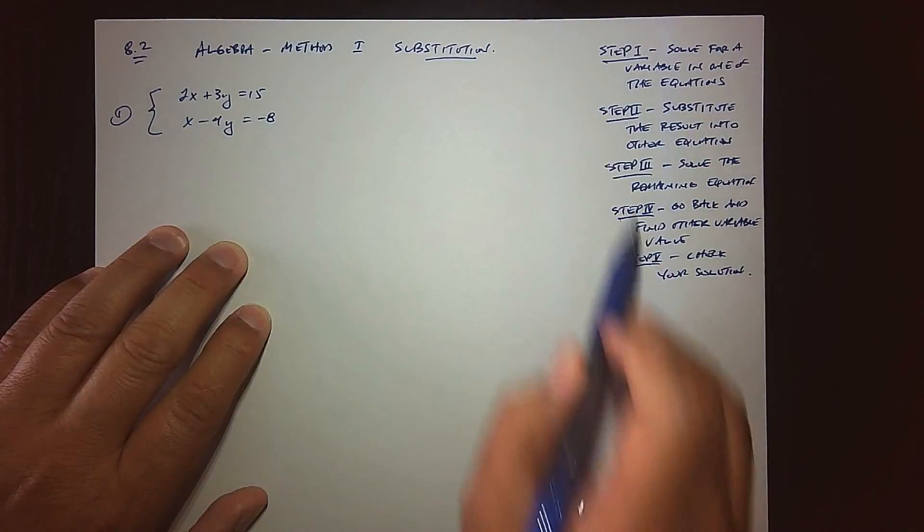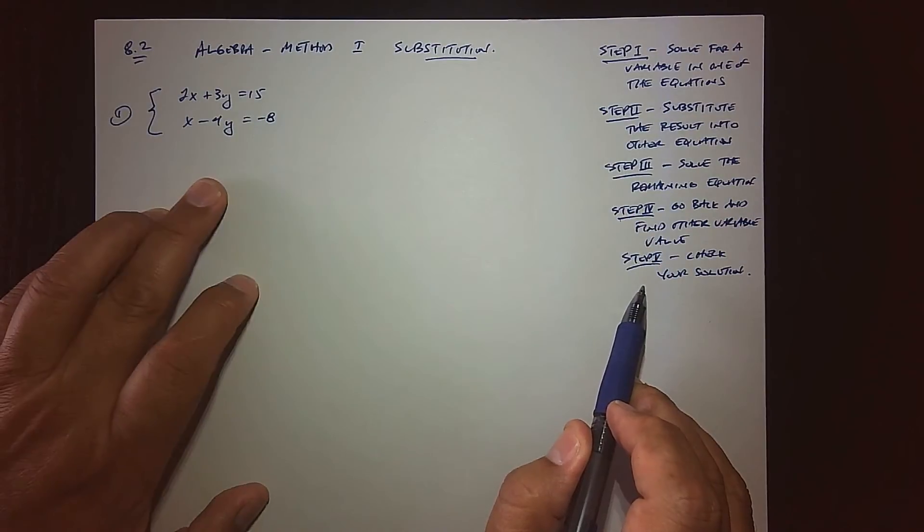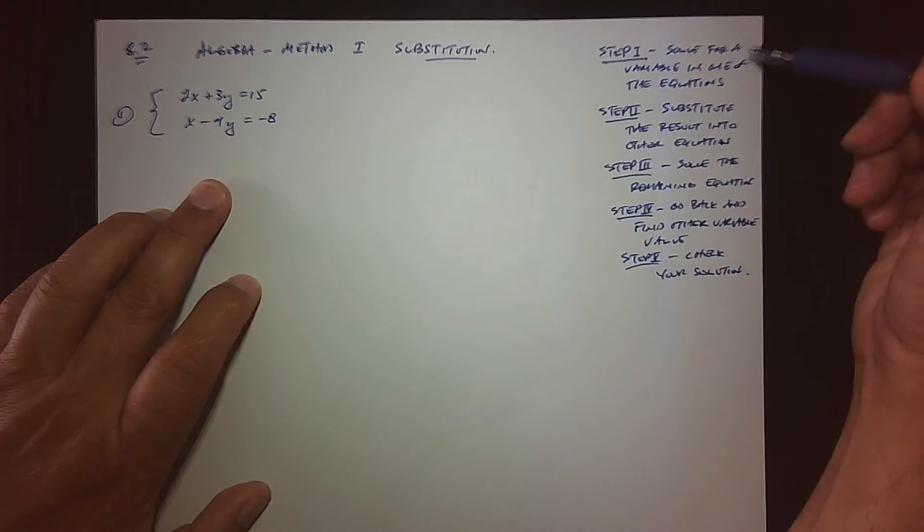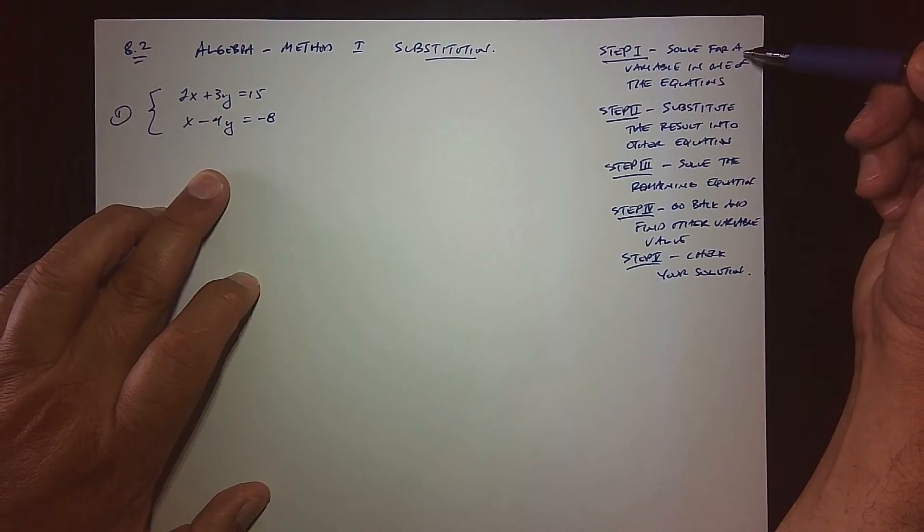Let me talk about the game plan and then we'll see it in action with this system of equations. The first thing we need to do when solving a system using the substitution method is we need to make a decision. We have to solve for a variable in one of the equations.